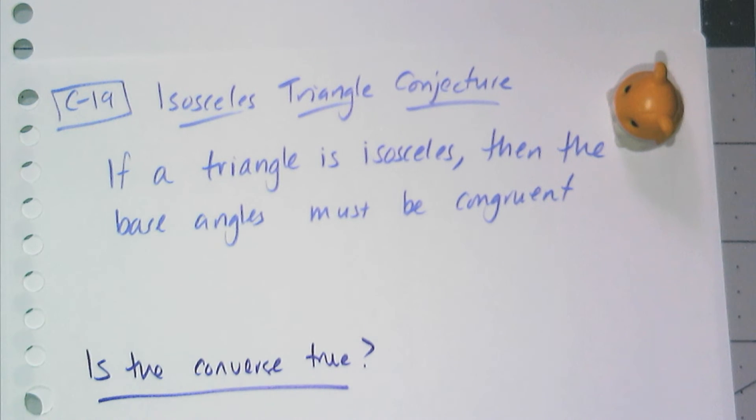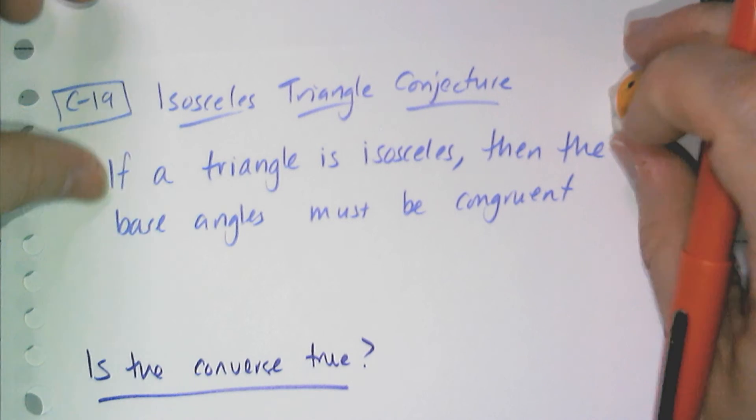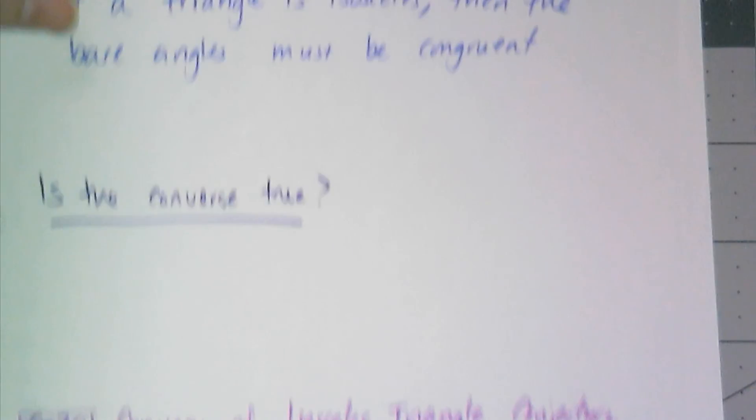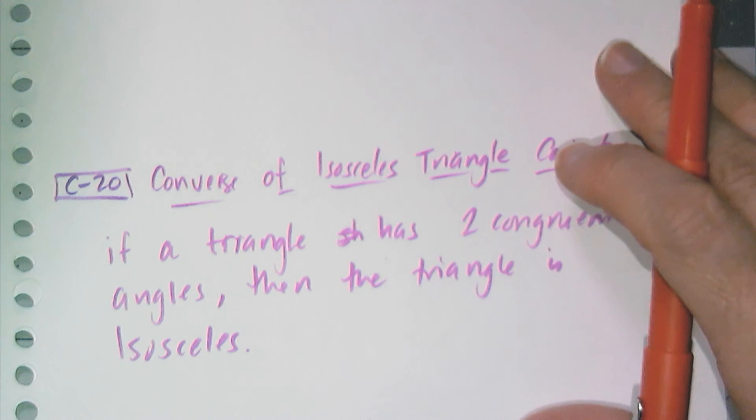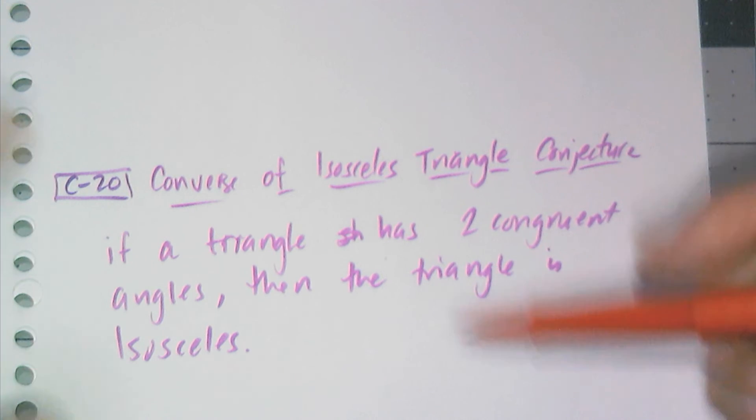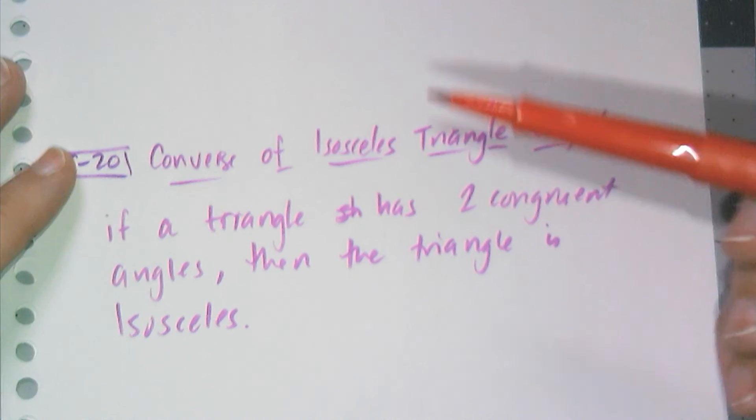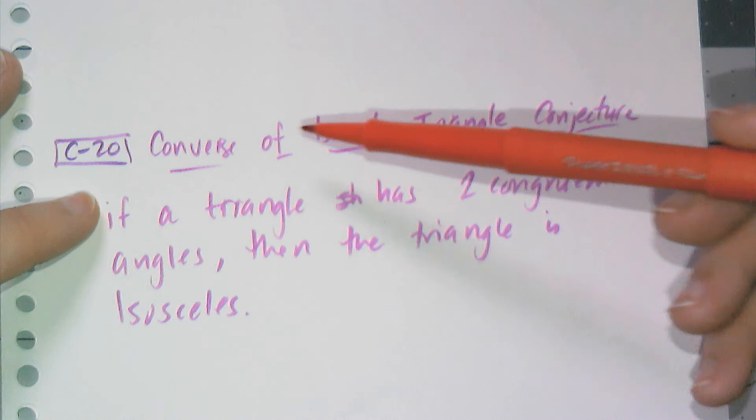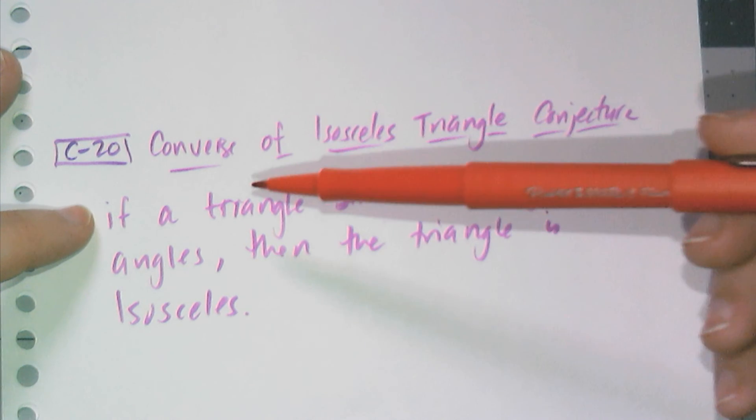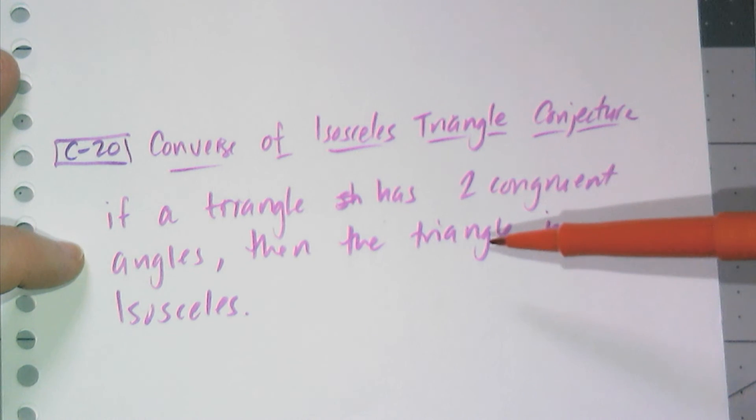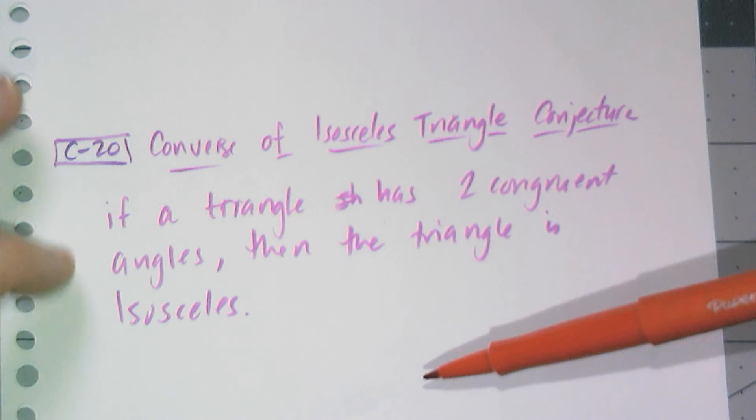So then I have to ask myself, is the converse true? If I have a triangle where the base angles are congruent, is the triangle going to be isosceles? And the answer is yes. I'm not going to prove it right now. I am going to tell you this is a proof that you can do with constructions. So the converse specifically says if a triangle has two congruent angles, then the triangle must be isosceles.